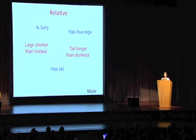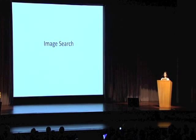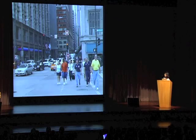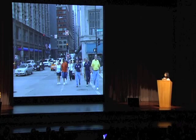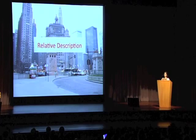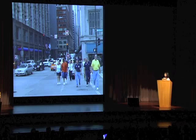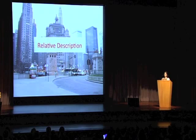This isn't true just for describing mules — it's also true in image search. Let's say you're looking for an image of downtown Chicago and this is what you get. Maybe what you were looking for was more or less like this, but you didn't want so many people in the picture. The way you would think of the image you want is that it's a similar image but less congested. And that, again, is a relative description.